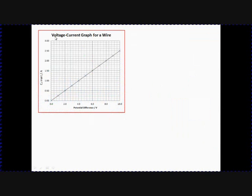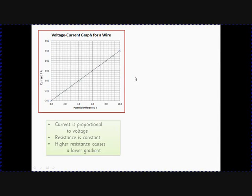Here's our voltage current graph of the wire. We notice the current is proportional to the voltage. The resistance is constant, so if you wanted to pick any points along this line to find the resistance, you'd get the same answer. But if the resistance was higher, I'd get a lower gradient because I'd get less current for the same potential difference.